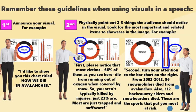Second, turn your attention to the bar chart on the right. From 2002 to 2012, 96 snowmobilers died from avalanches. Also, 112 backcountry skiers and snowboarders died. These are the sports that put you most at risk.